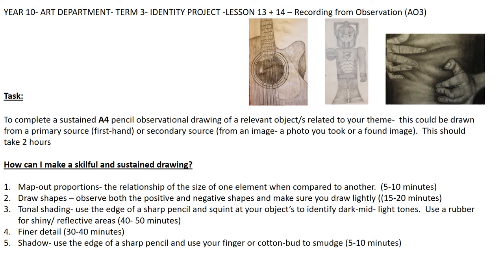You are now required to record from observation within your identity project. This is assessment objective number three. You've already taken some photographs, presented a contact sheet, and then you should have edited and enlarged at least six of your favourite photographs and presented them on a double page. Don't worry if you haven't got access to a printer — we can do this at school at a later date. Just make sure you've got some pages free to present your photographs.